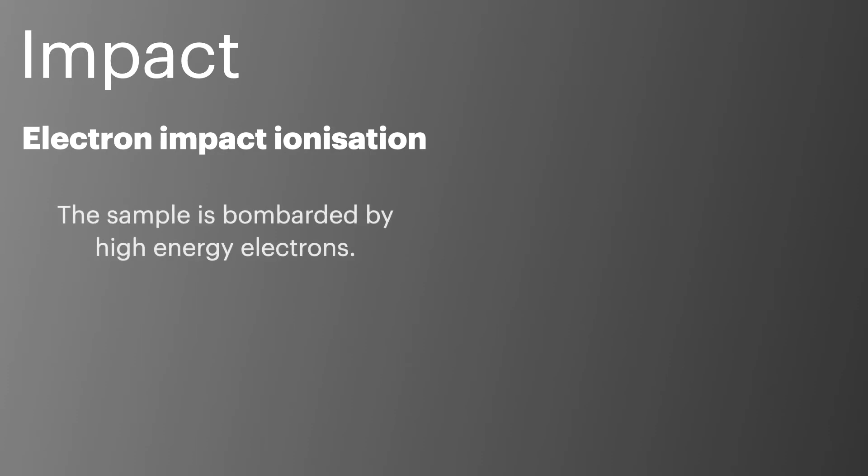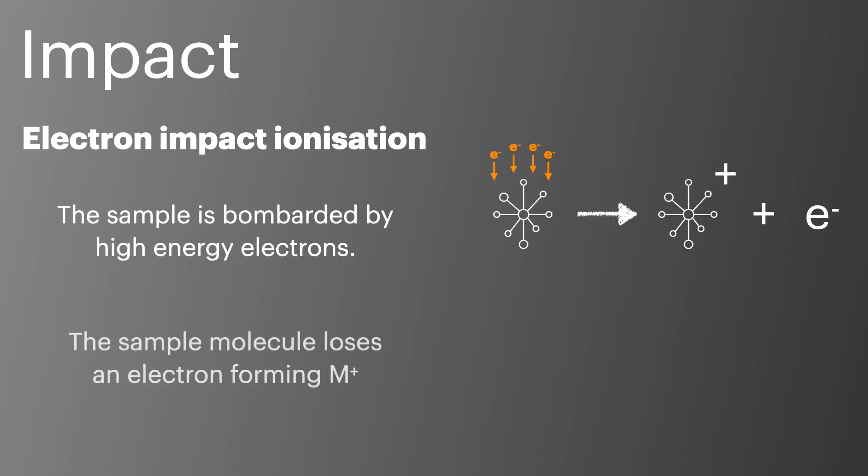In electron impact ionization, the sample of atoms is bombarded by high-energy electrons. These knock off the electrons from the sample leaving it with a positive charge. We can show this as a simple equation where I've used M to represent any element. It's really important to remember the state symbols when writing out this equation as the ionization takes place in the gaseous phase.